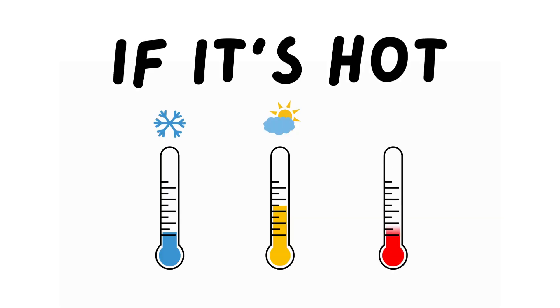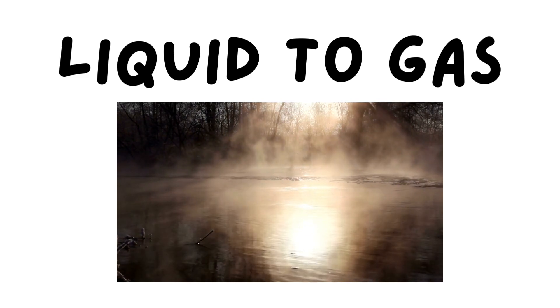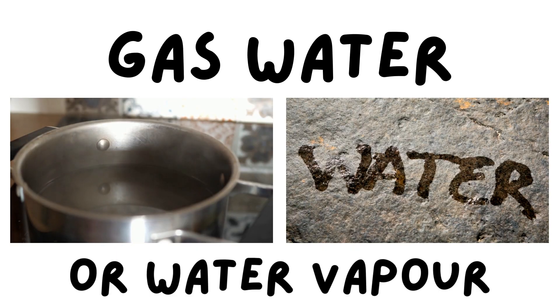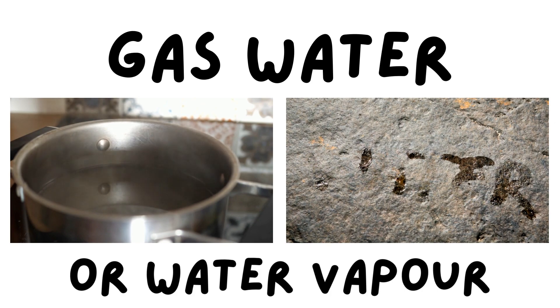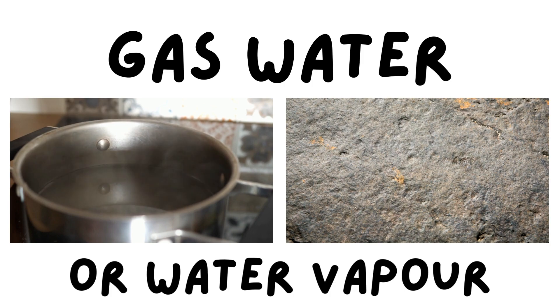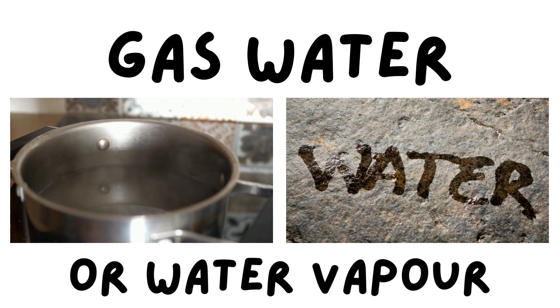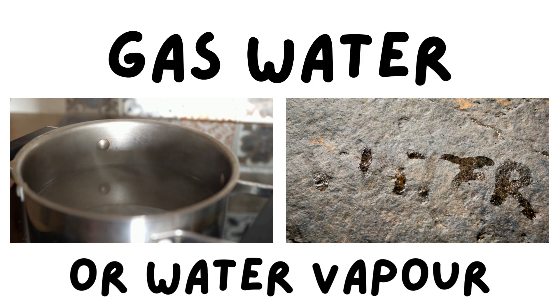If the temperature gets hot, the liquid water changes form into a gas. Water vapor is what we call water in gas form. We know when water has taken a gas form when we watch a pot boiling water, or where puddles dry up after it rains.